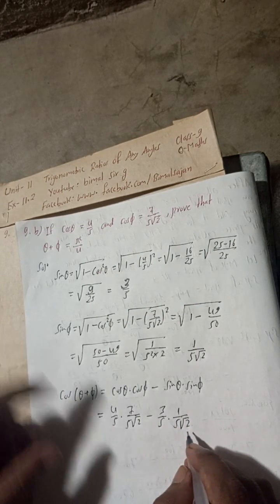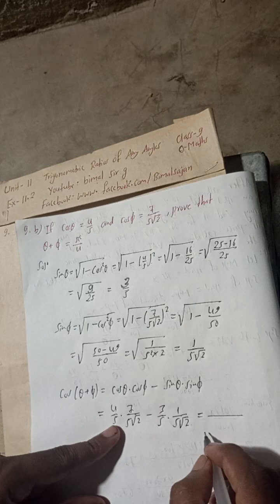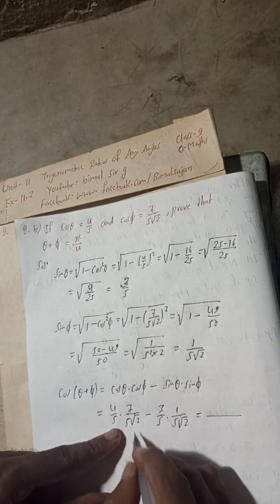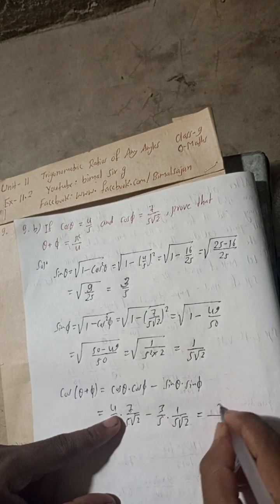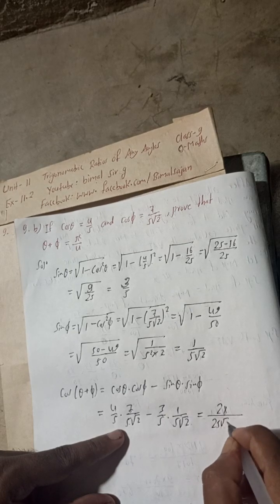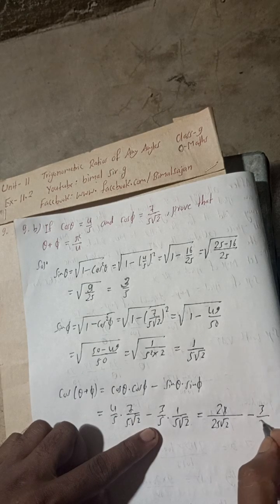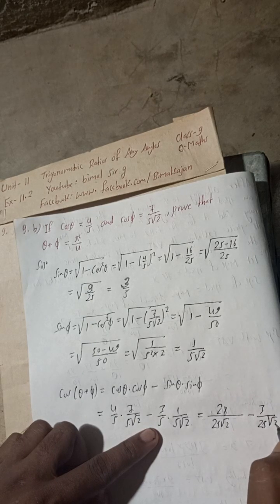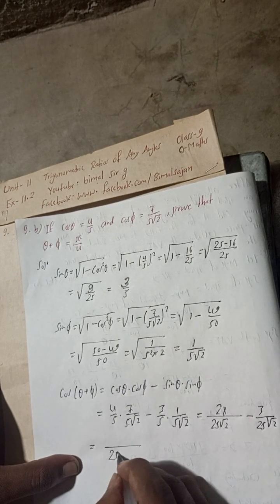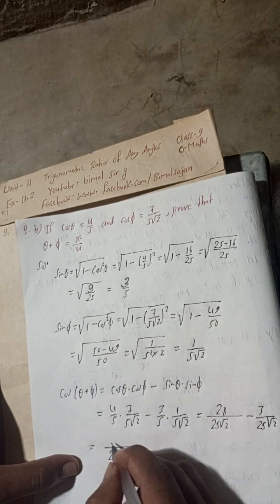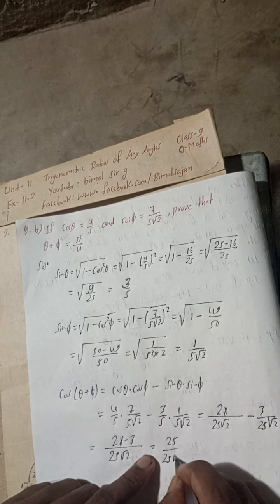Both sides have the same denominator. This gives us (4×7)/(25√2) - 3/(25√2) = 28/(25√2) - 3/(25√2). Since the LCM is the same, we get (28 - 3)/(25√2).